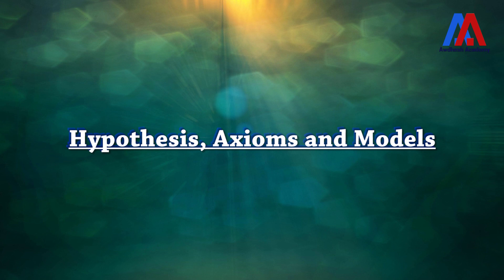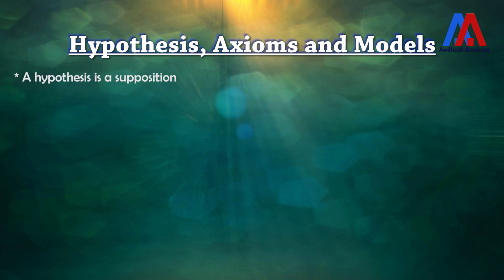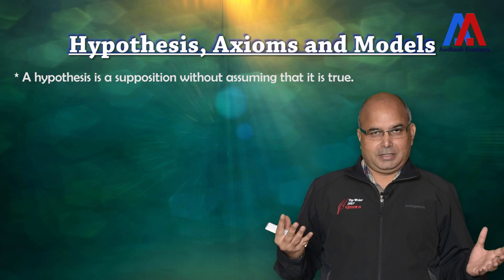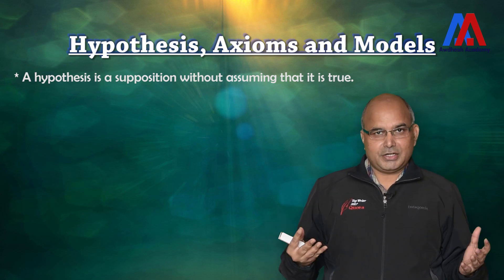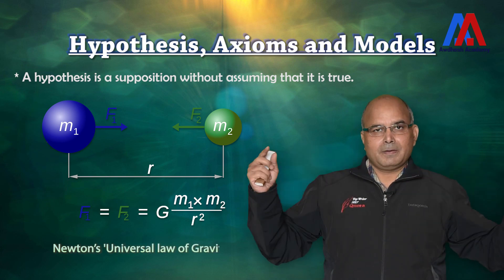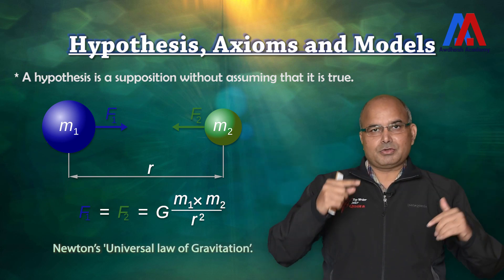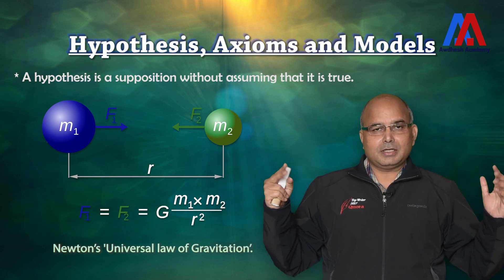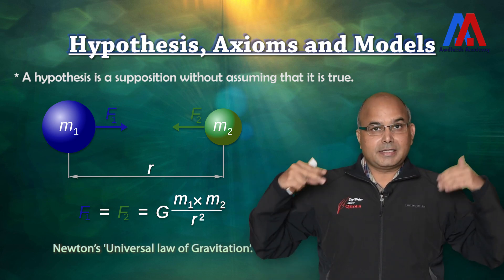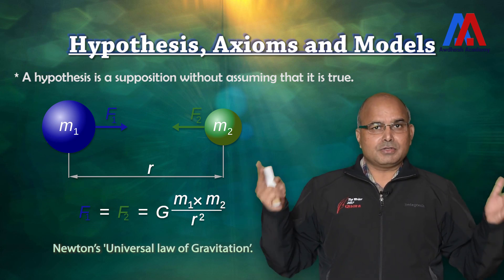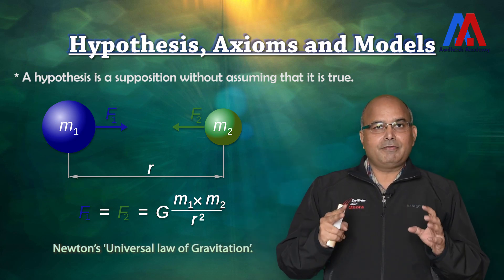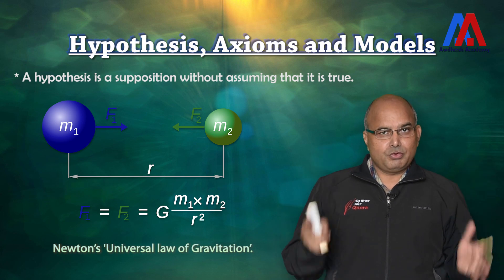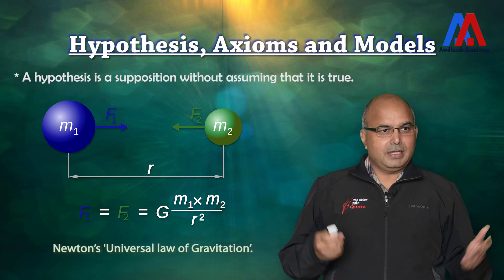In science we should understand three important terms. The first is hypothesis — a supposition without assuming it is true. You are supposing something without proving it. For example, Newton said the gravitational force between two objects is inversely proportional to the square of the distance and proportional to their masses. He presumed and created this — he did not prove it. But when tested, it was found correct in every case, making it a valid hypothesis. If somebody disproves it, it is rejected.